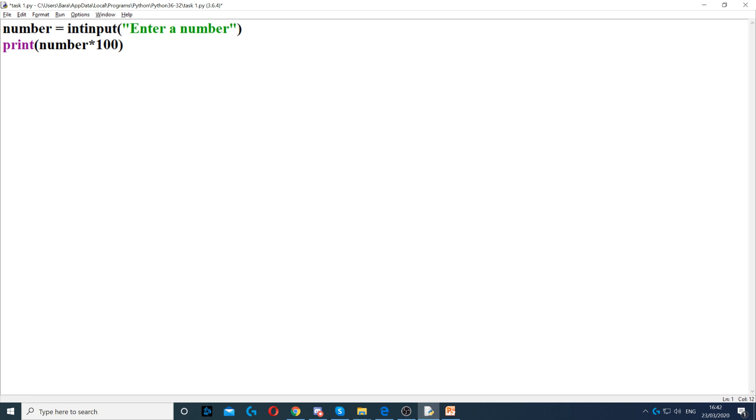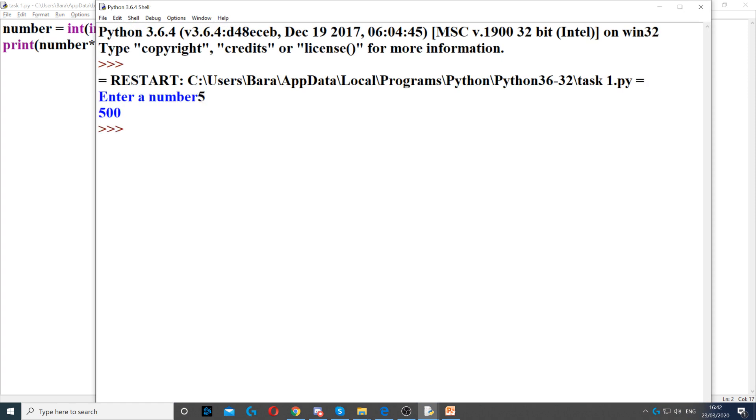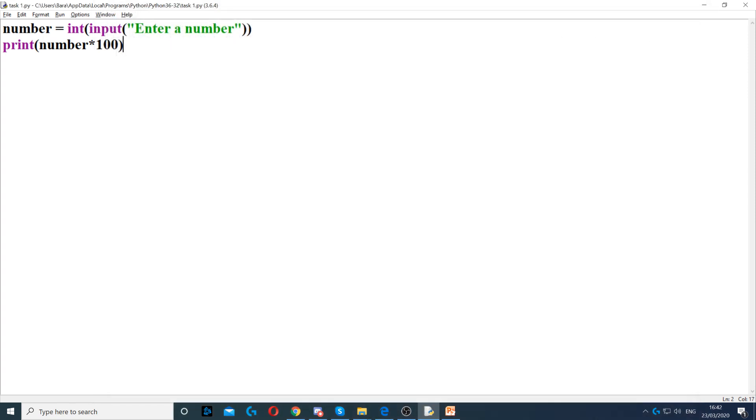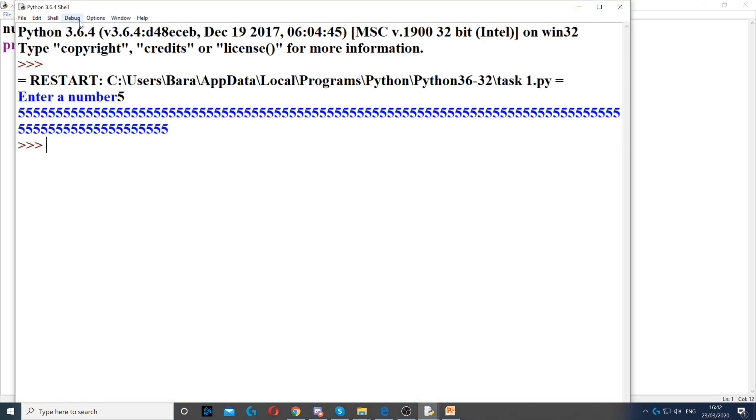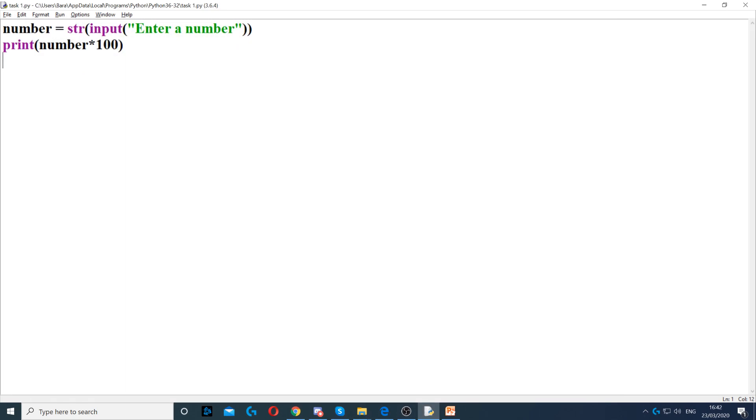So to tell it that we need the number to be an integer, you would put int and then you open the parentheses and close one more at the end. And now if I type 5 again, you'll see that I get the correct answer, which is 500. And now normally in Python you can also do strings. So you can change int to a string. This will become a string, and if I type 5, it will display 500 times because it counts as a string.